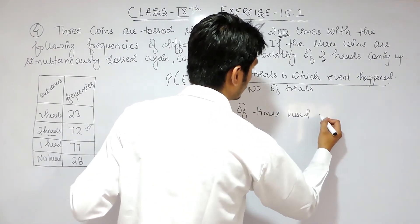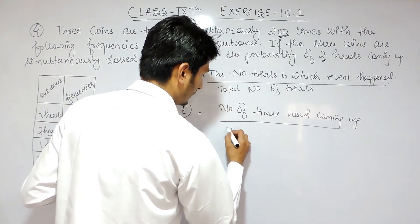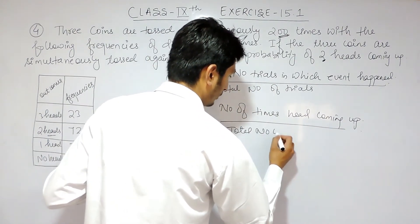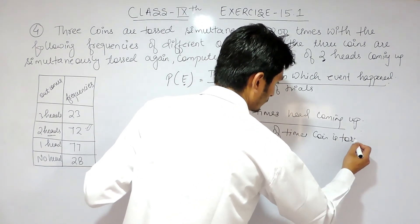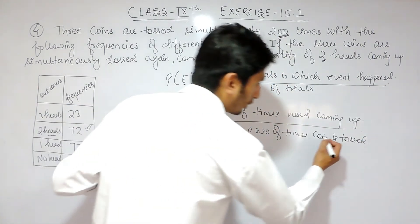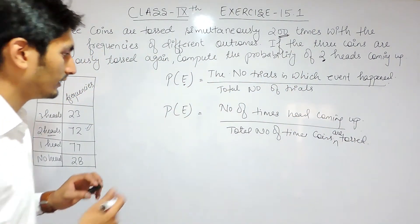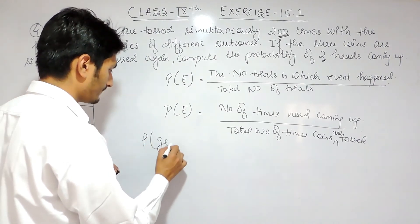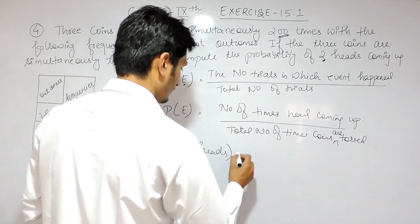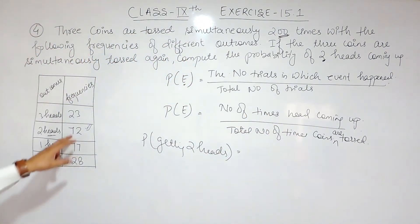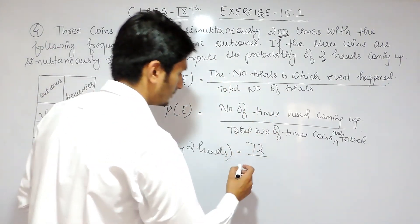So the probability of getting two heads equals the number of times two heads came up upon the total number of times the coins were tossed. Since there are three coins, the probability of getting two heads equals 72 upon 200.